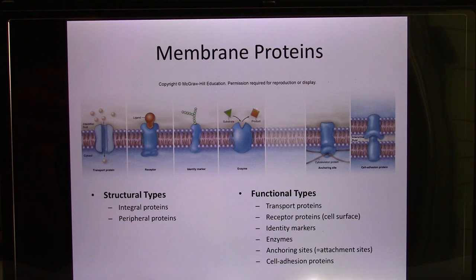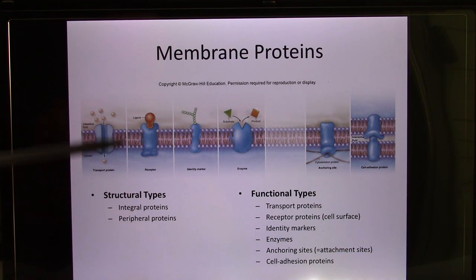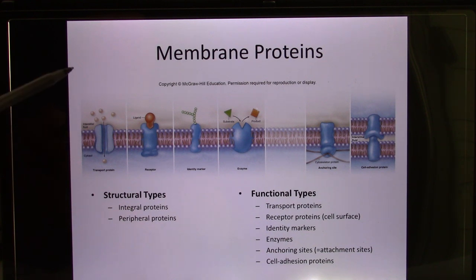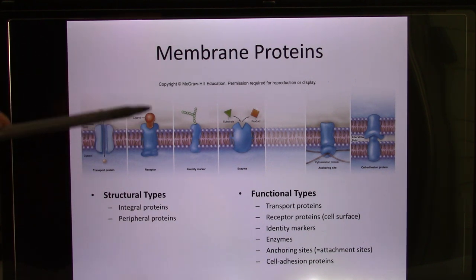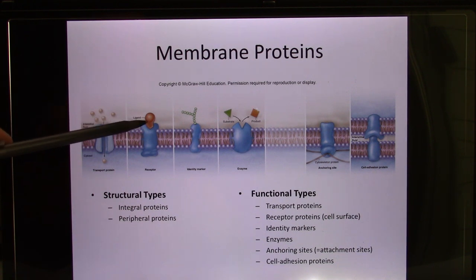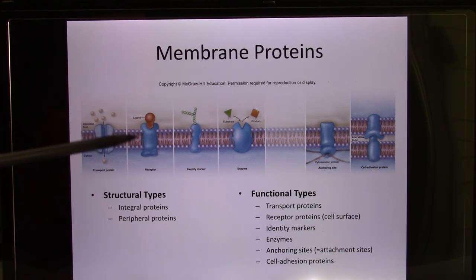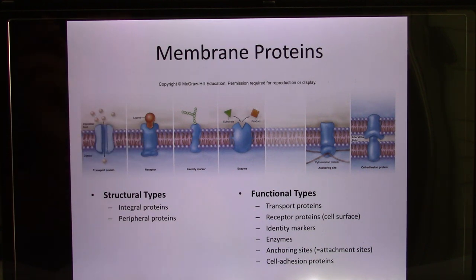Let's look at membrane proteins — they have a lot of different functions. The one we're going to focus on today will be the transport protein — it makes molecules able to go in and out. But they also have other functions. Quickly, we're going to talk about how cells communicate. They release a chemical molecule called a ligand — this can be a neurotransmitter or a hormone. And the cell needs to have a receptor to respond to it, so we have receptor proteins.